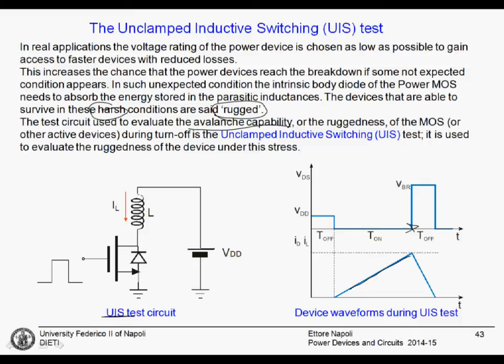When you switch off the device, the voltage increases. During the inductive load switch, at a certain point the voltage would normally reach the drain supply voltage and a freewheeling diode would switch on to draw the current. In this case, there is no diode to stop the voltage rise and drain the current. The voltage therefore keeps increasing, with no current yet flowing through the device, until it reaches the breakdown voltage.